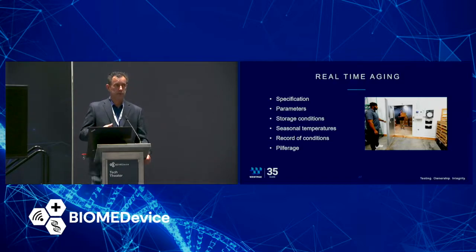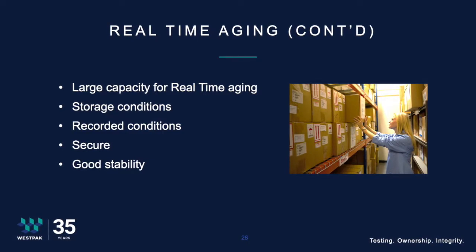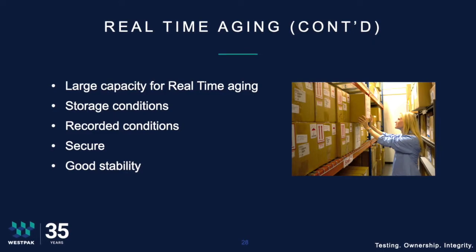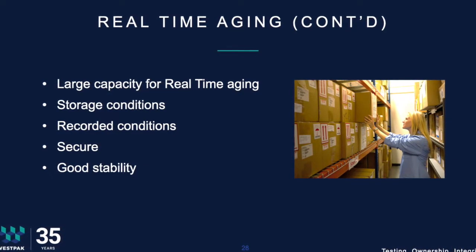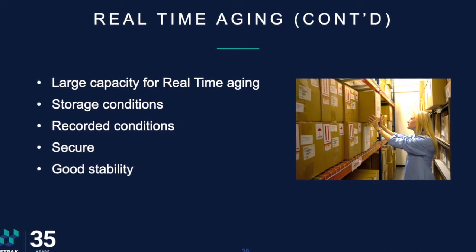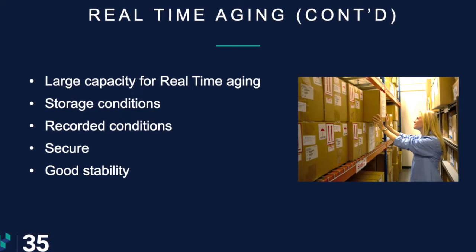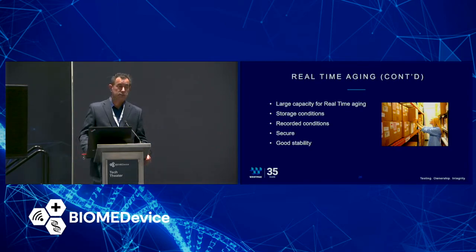One of the solutions we provide is real-time storage. We have large-capacity real-time storage. Our storage conditions are about 25 degrees C. There aren't strict tolerances for real-time aging, so you may see some seasonal fluctuations, but those are recorded and submitted as an appendix in the report we provide. It's secure — we check products in and out. Overall, the real-time aging room has good stability, good records, and good stability over time.